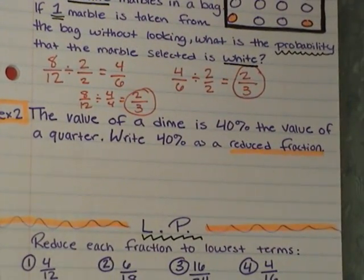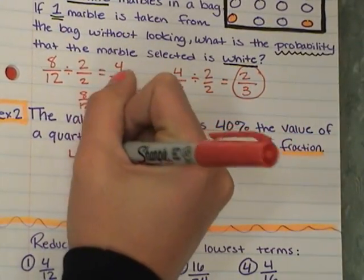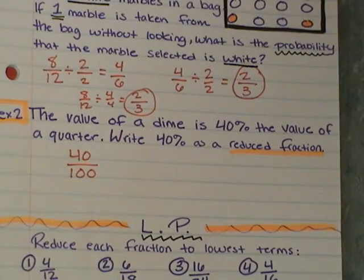The next one. The value of a dime is 40% of the value of a quarter. Write 40% as a reduced fraction. So 40%. If we're going to write 40% as a fraction, we know that all percents are out of 100. So I'm going to take 40 and put it over 100. Because that is a percent.